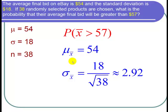And the standard deviation, sigma sub X bar is equal to sigma divided by the square root of n, which is 18 divided by the square root of 38. And my calculator gave me that this is about equal to 2.92.